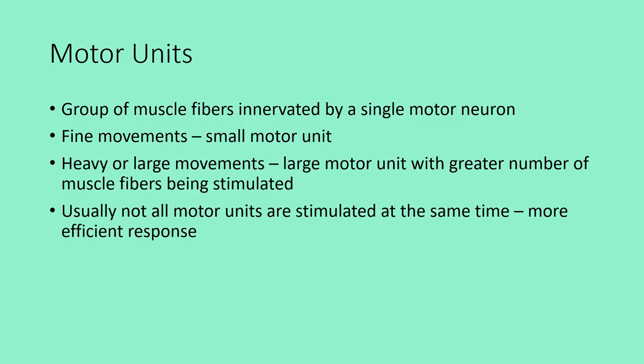A motor unit is a group of muscle fibers innervated by a single motor neuron. Smaller motor units produce fine-tuned movements like grasping a pencil; larger movements like running or lifting heavy weights involve larger motor units. Usually not all motor units are stimulated simultaneously, which results in a more efficient response and slower fatigue.